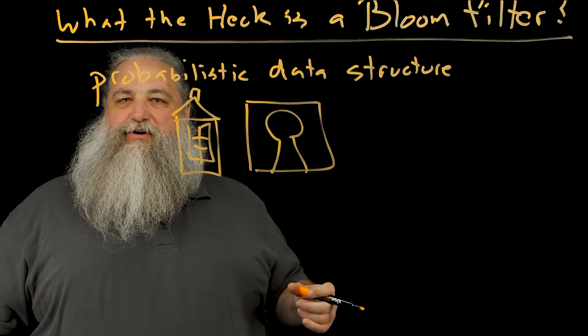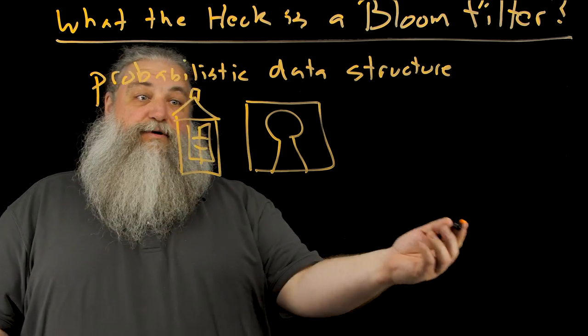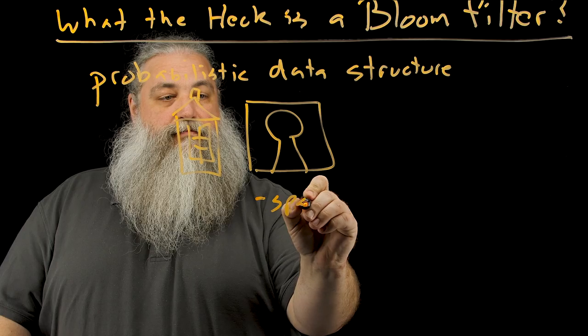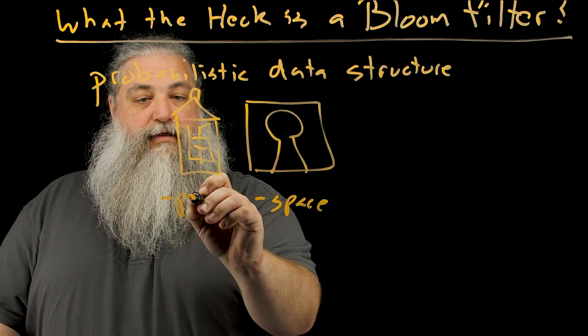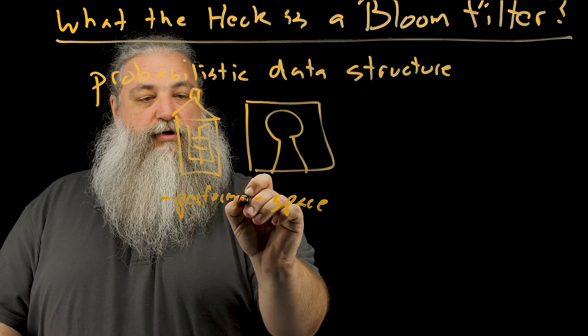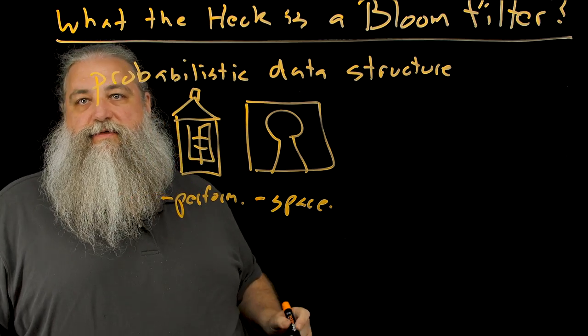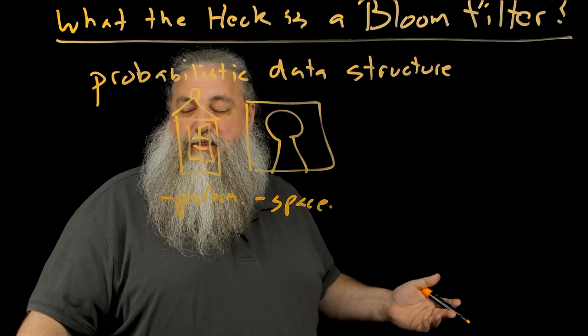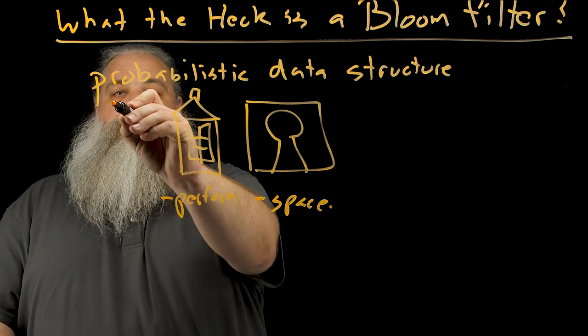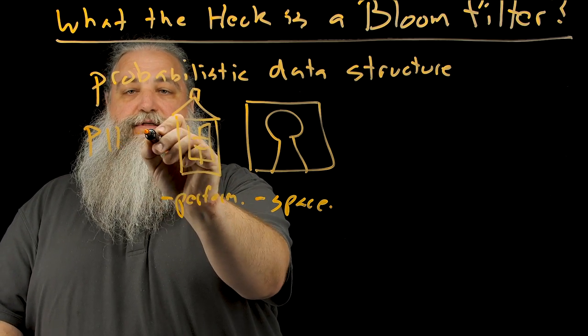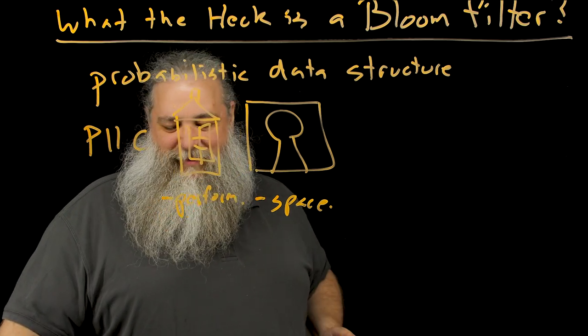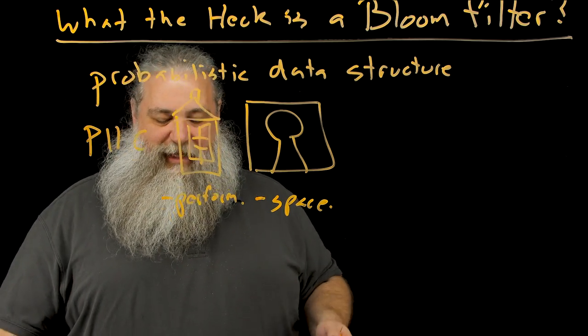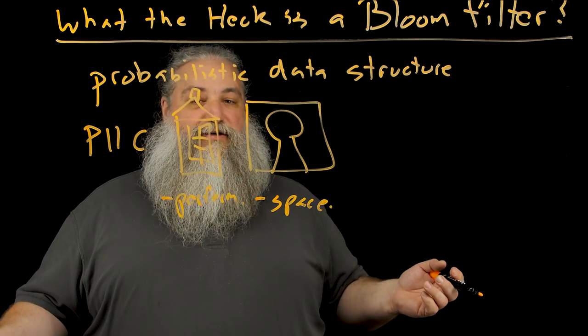And you might be wondering why do we want to have these things? Well the reason we have a JPEG is because they save space and we also can get some performance out of these things so they can be faster and they can take up less space. So this is why we would want to use a probabilistic data structure. We abbreviate this P11C because it takes forever to write probabilistic. It's even kind of hard to say honestly.